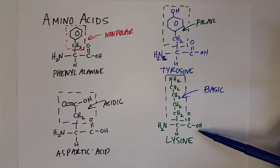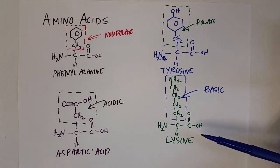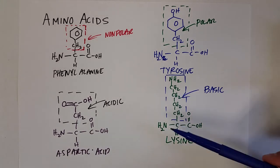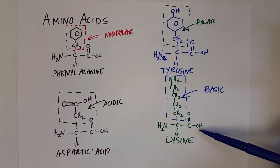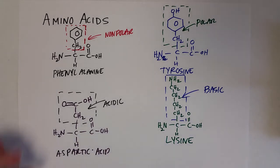That amine on the R group can accept protons, and the amines on all amino acids in their basic structure can also accept protons. The carboxylic acid functional group can donate protons, so it acts as an acid. Depending on the solution, the amine group can accept a proton and the carboxylic acid can donate a proton — they can do one, both, or any combination.